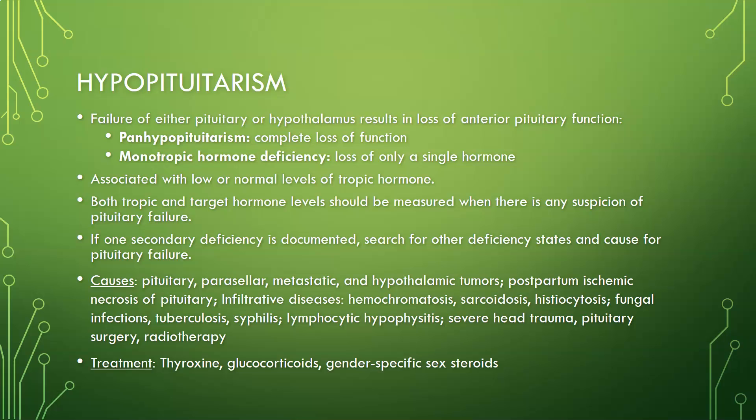Regarding hypopituitarism: failure of either the pituitary or hypothalamus can result in loss of anterior pituitary functions. Panhypopituitarism is the complete loss of function of all pituitary hormones. A monotropic hormone deficiency is the loss of a single hormone, such as thyroid, growth hormone, or sex hormones. Hypopituitarism is associated with low or normal levels of tropic hormones. Both tropic and target hormone levels should be measured when pituitary failure is suspected — for example, measuring T3, T4, TSH, and TRH for thyroid evaluation.